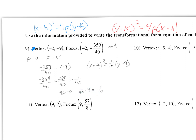This information gives us a 4p of 1/10, and it is positive, which means it's vertical and opens upward. The vertex is (−2, −9), so using x minus h squared: (x + 2)² = (1/10)(y + 9). That is the equation from this information.